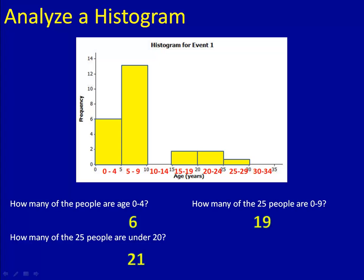Finally, how many people are under 20? Well, that's 4 different bars. 0 to 4, 5 to 9, 10 through 14, and 15 through 19. That's a total of 21 people who are under 20 years old.